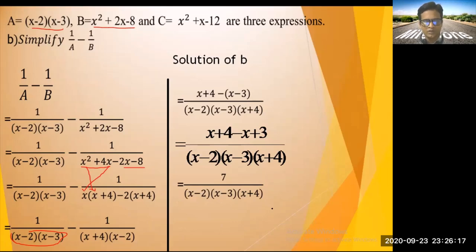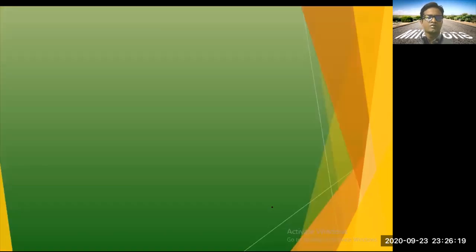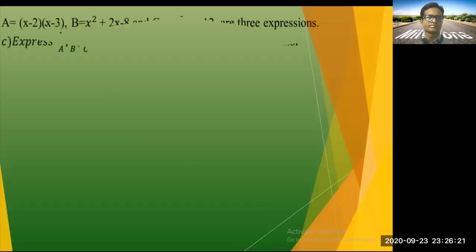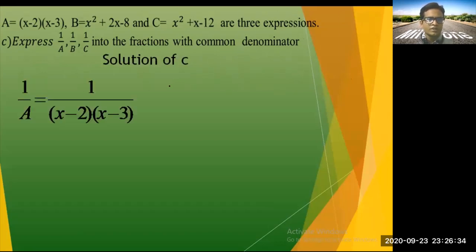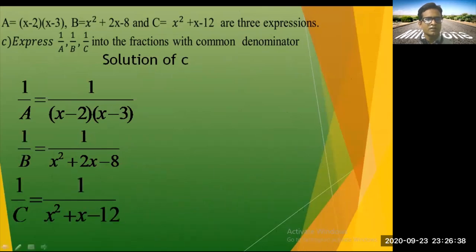I hope you understood. Now part (c): Express 1/A, 1/B, 1/C as fractions with a common denominator. We already have A = (x - 2)(x - 3) and B = (x + 4)(x - 2) from our earlier work.